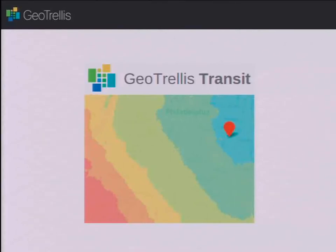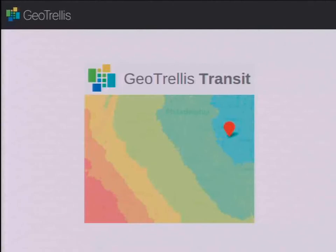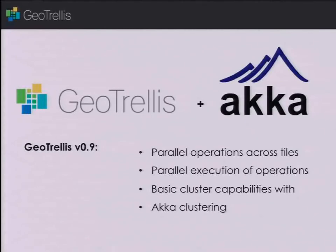We have recently added an extension to GeoTrellis called GeoTrellis Transit, which is able to consume OpenStreetMap data as well as GTFS data — the General Transit Feed Specification — and use that in a custom data structure that supports really fast processing to generate not just routes but transit sheds and travel sheds. Being able to take a location and say, show me what I can get to in 10 minutes or an hour, and do that through different transit networks — both driving and transit. In version 0.9, we are largely still reliant on Akka. Version 0.9 supports parallel operations across tiled data sets, parallel execution of those operations, and some basic clustering capabilities with Akka.